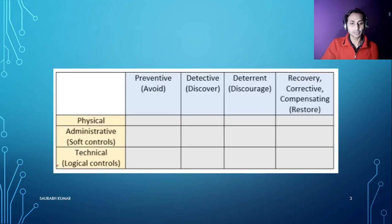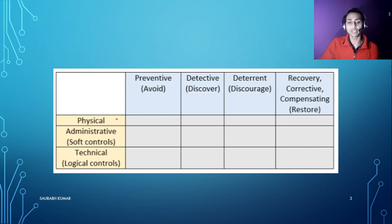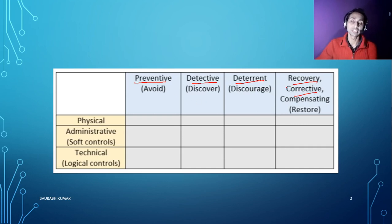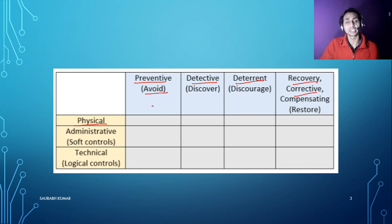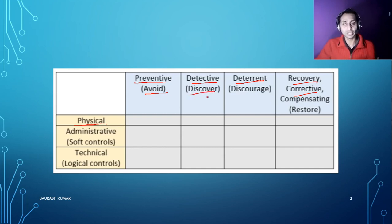Finally, we need to create a security control table to assess what kind of security we have implemented. The key functions are: preventive (avoid), detective (discover), deterrent (discourage), and recovery (corrective). For example, in physical security — who can enter your server room or touch the firewall — putting a lock is a form of 'avoid', since you only share the key with authorized people.